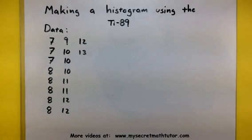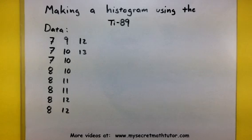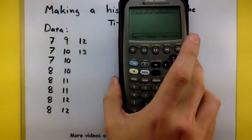Welcome to My Secret Math Tutor. Right now we're going to work on an example of making a histogram using our TI-89 calculator. You can see off to the left I have all the data that I want to make into this histogram. So let's go ahead and grab our calculators and see how this process works.